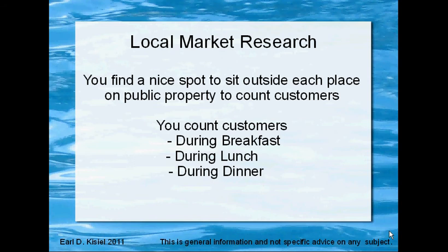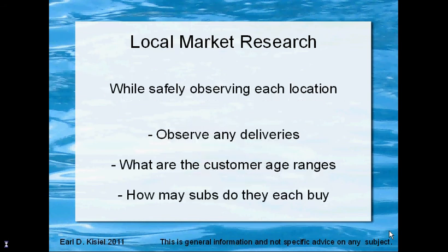Find a nice spot to sit down outside each of the restaurants and convenience stores on public property, and do customer counts. Sit out there during the breakfast rush from 6 to 7, the lunch rush from 11 to 1, and dinner from 4 to 6, counting how many people go into the facility. That'll give you an idea of what customer crowds are like and how many sandwiches you could sell. While you're observing, look for any truck deliveries. Observe the truck — quite often you can see what brands are being offloaded to get an idea of what they're having brought in, and you may want to contact those wholesalers for pricing information.